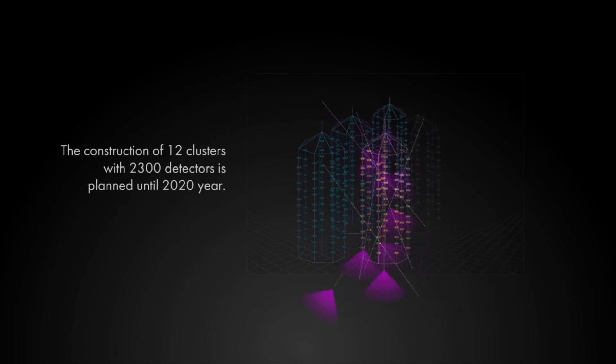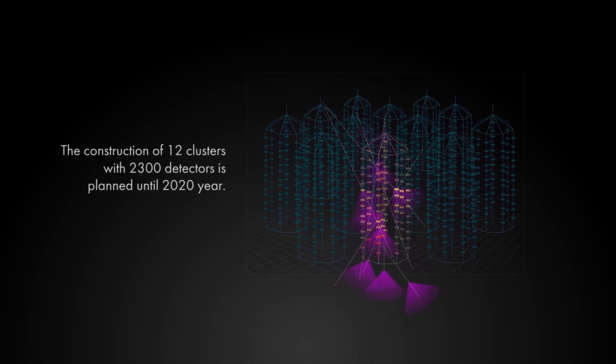By the year 2020, the Neutrino Telescope is expected to consist of 12 clusters containing 2,300 optical modules in total.